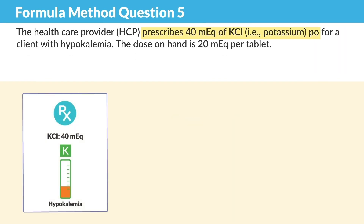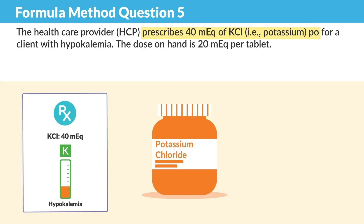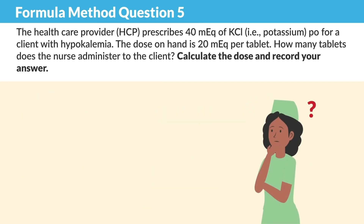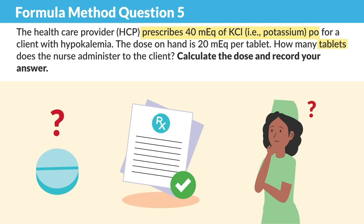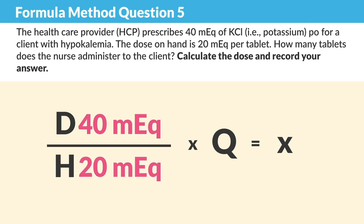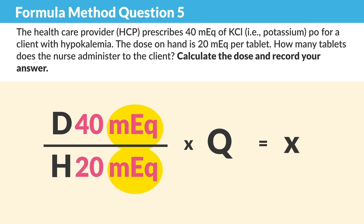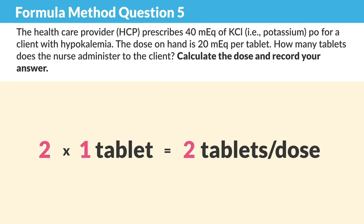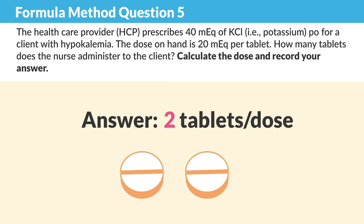Question number five: the healthcare provider prescribes 40 mEq of KCL PO for a client with hypokalemia — that's low potassium. Don't get scared by the micro equivalents; just look at the big number, 40. The dose on hand is 20 mEq. How many tablets does the nurse administer? Set up the formula: D over H times Q — drinks are on the house times the quantity. D is 40, H is 20 — both micro equivalents, so they match. Q is one. So 40 over 20 times one. The correct answer is two tablets per dose.